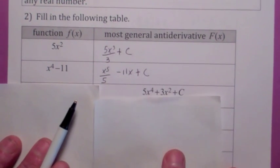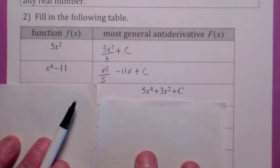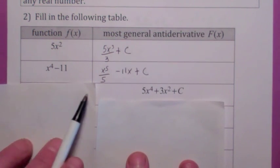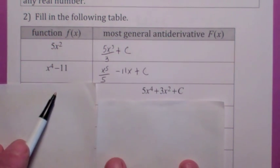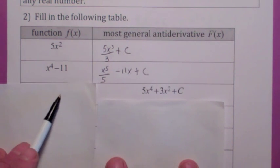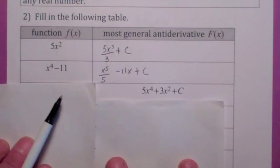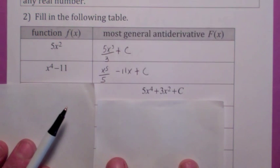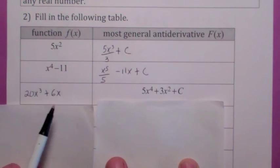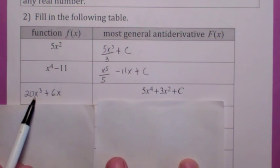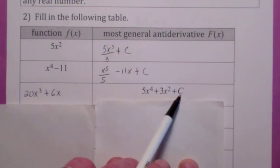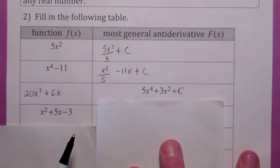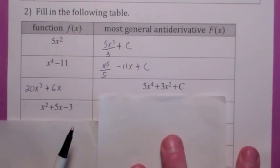We can go backwards. What if I give you the most general antiderivative and I want you to find the function? I give you big F and I want you to find little f. That's actually easier because the derivative of big F is little f. So you should just get 20x to the 3rd plus 6x plus 0, because the derivative of the constant is 0.